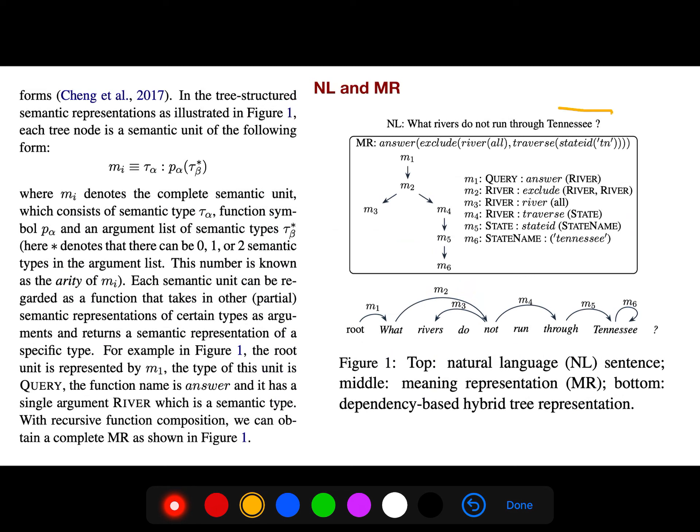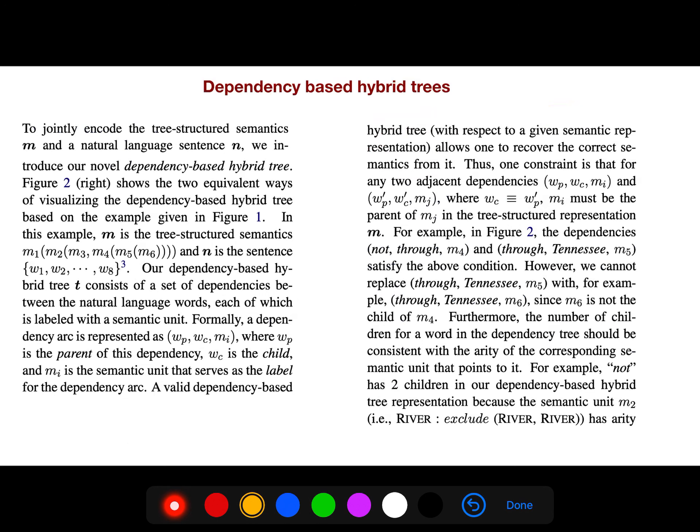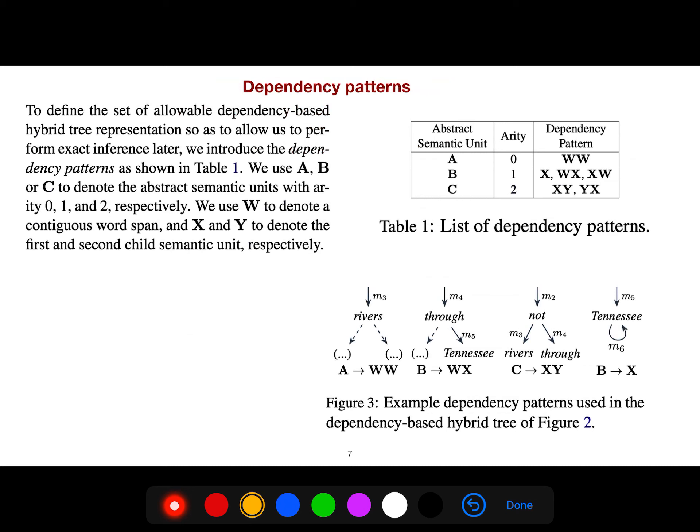For natural language queries such as 'what rivers do not run through Tennessee,' the answer becomes like this: first you have m1, then m2, then m3, m4. You see the graph—it's a list of dependency patterns. As I said in previous lectures, our patterns are of the same kind. Sometimes you have words, sometimes you have abstract semantic units, sometimes you have a contiguous word span.